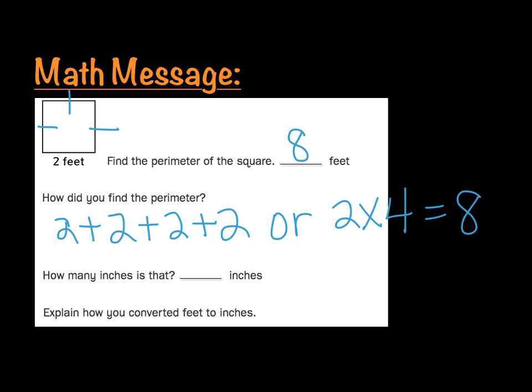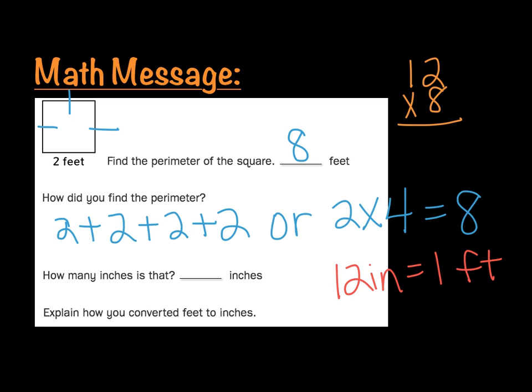So if this is eight feet, how many inches is that? How many inches are in one foot? There are twelve inches in one foot. How many inches would eight feet be? We would take eight times twelve to get that. We're going to take two times eight, which gives us sixteen. We put the six in the ones column and carry the one, and now I have eight times one plus one. So this gives me ninety-six inches.